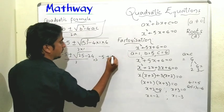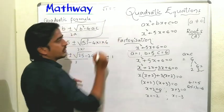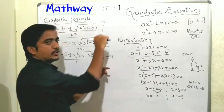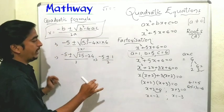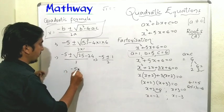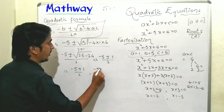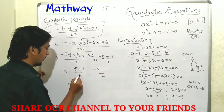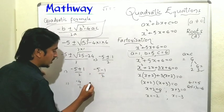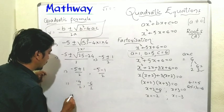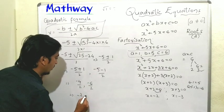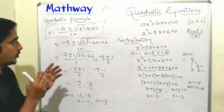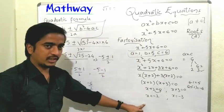Taking the plus sign: (-5 + 1) / 2 = -4 / 2 = -2. Taking the minus sign: (-5 - 1) / 2 = -6 / 2 = -3. So x = -2 and x = -3 — the same roots as found by factorization. You can use either factorization or the quadratic formula to find solutions; both methods give the same answer.